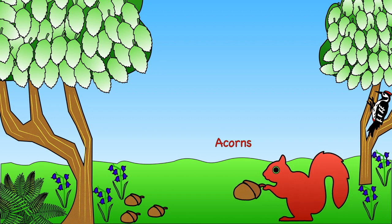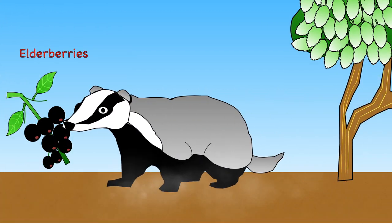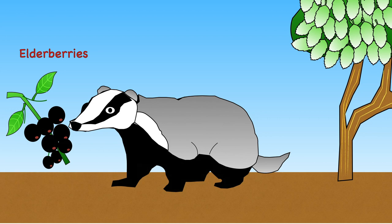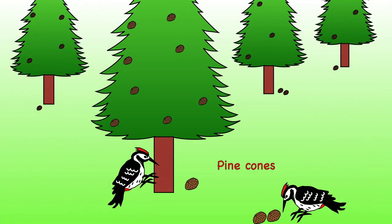Squirrels search for acorns. Badgers enjoy eating elderberry fruits. And woodpeckers peck away at pinecones.